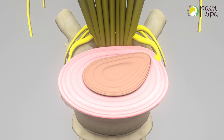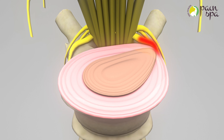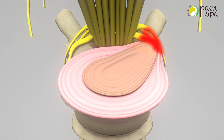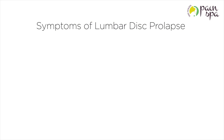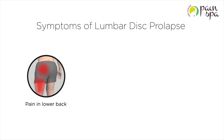If the disc is injured, the nucleus may bulge against the outer ring and cause back pain. The nucleus may leak out of a tear in the annulus, a condition referred to as disc herniation. This may cause irritation or compression of the nerve root, resulting in leg pain or sciatica.